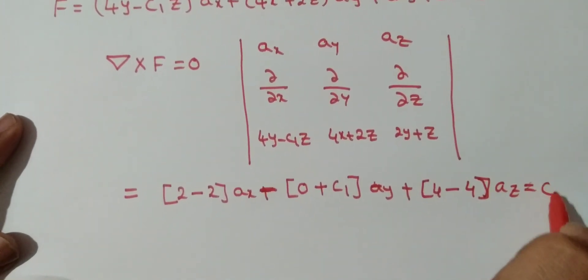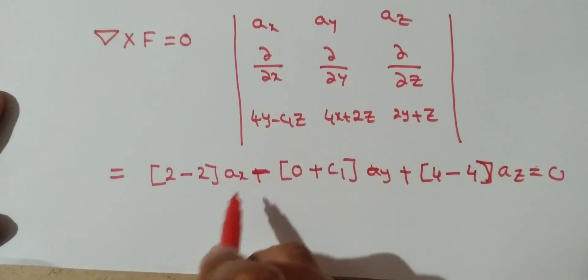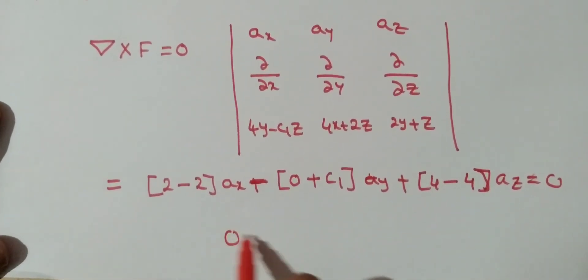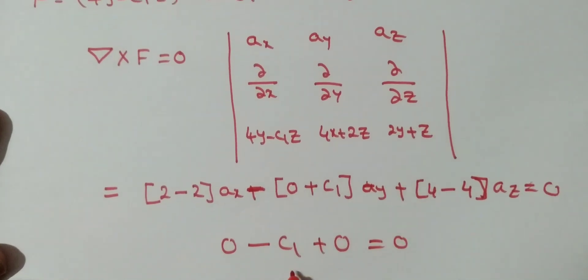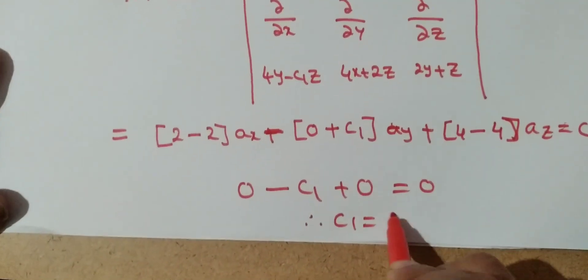This curl must equal 0. So, [2 - 2]ax gives 0. For the ay component, 0 - c1 = 0. Therefore, c1 = 0.